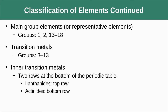We have classifications for elements: main group elements are in groups 1, 2, and 13 through 18. Transition metals are found in groups 3 through 13. Inner transition metals are the two rows at the bottom of the periodic table — the lanthanides and the actinides.